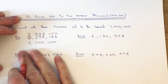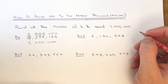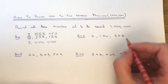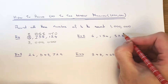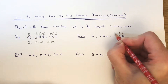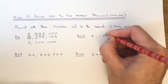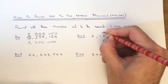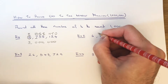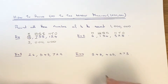Let's move on to example 2. This time we've got 6,154,328 and we've got to round it off to the nearest 1 million. So again, if we look for our millions column, start on the right-hand side: ones, then tens, then hundreds, then thousands, then tens of thousands, then hundreds of thousands, and then we've got our millions at the end.